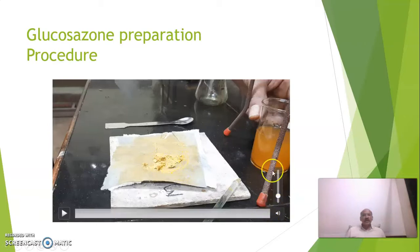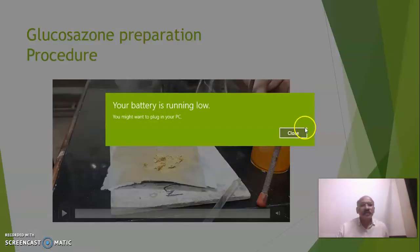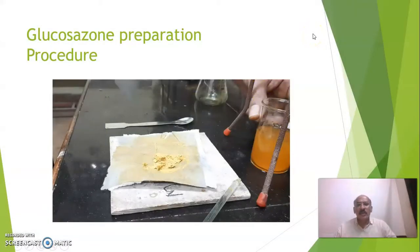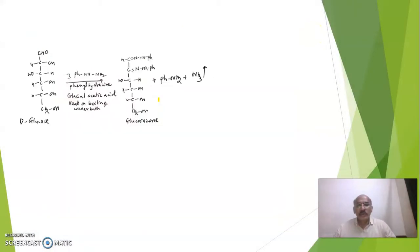That is called a mother liquor. And then we have to go for again filtration by using filter paper, and the product will be separated which we have to dry, weigh, and then proceed for the calculations and melting point determination.